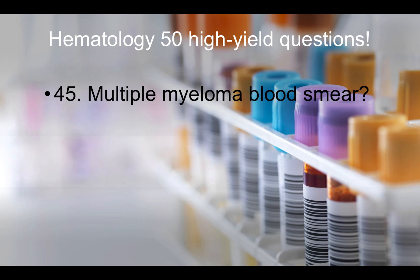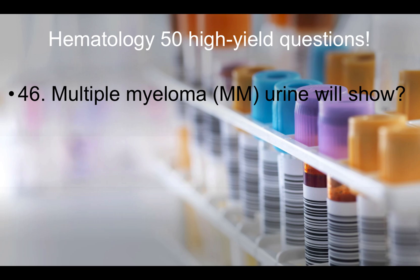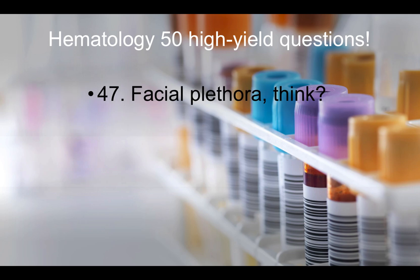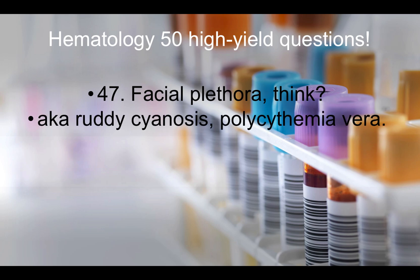Question forty-five: Multiple myeloma blood smear will show Rouleaux sign. Question forty-six: Multiple myeloma urine will show Bence-Jones protein. If you hear Bence-Jones protein in a urine analysis in a question stem, think multiple myeloma. Question forty-seven: Facial plethora should make you think of ruddy cyanosis or polycythemia vera.